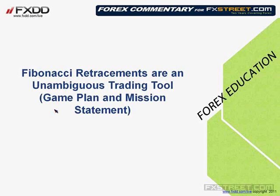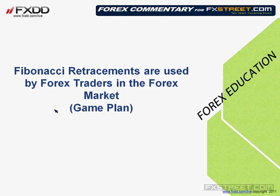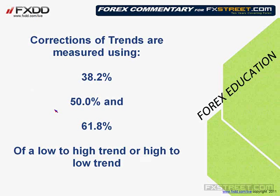Fibonacci retracements are what I call unambiguous trading tools. If you have a line at the 38.2% retracement level, if the market price is above it, that defines bullish — you want to be long. If the market price goes below it, that means bearish — you continue to correct further. It gives you either bullish or bearish; it doesn't tell you overbought or oversold. It allows you to keep your fear to a minimum. Fibonacci retracements are used broadly by Forex traders, so as a retail trader you better get on board and understand them.